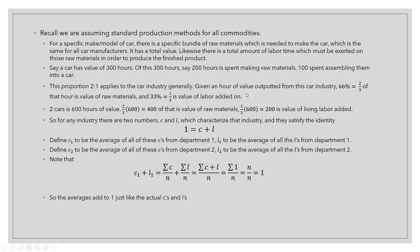If I give you one hour of output value from the car industry — not a car, just one hour of value — I can always say that two-thirds of that is value of raw materials and one-third is value of labor added on. This condition of breaking things down in this two-to-one way applies no matter how much value I output from the car industry. So these numbers, two-thirds and one-third, characterize the car industry at the moment.